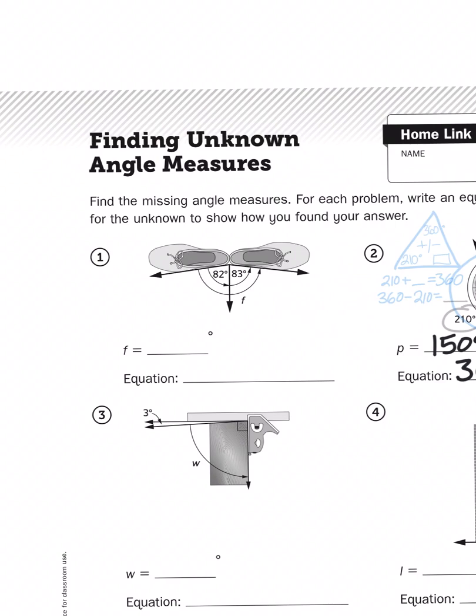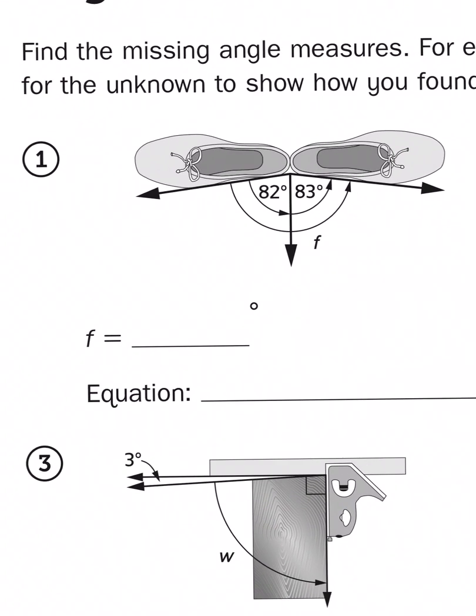So the angle of the left foot, or the left slipper, is 82 degrees, and the angle of the right slipper is 83 degrees. So here we're trying not to figure out what is the difference from 180 degrees, but we want to know how close to 180 degrees these two angles got.